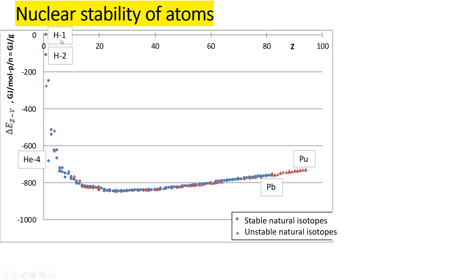For isotope H1, which contains only a single proton and electron, the interaction energy seems to be zero compared to the gigajoule-per-mole scale. But for the second isotope H2, which also contains a neutron, the nuclear interaction between neutrons and protons takes place and we already get on the order of minus 100 gigajoules per mole. This confirms that all values except H1 correspond to the interaction between protons and neutrons, not between protons and electrons.